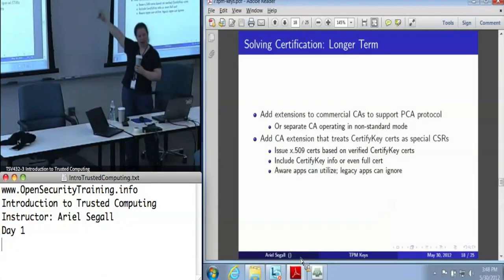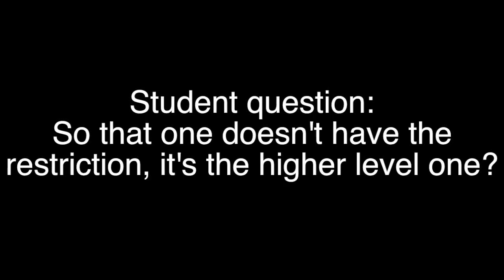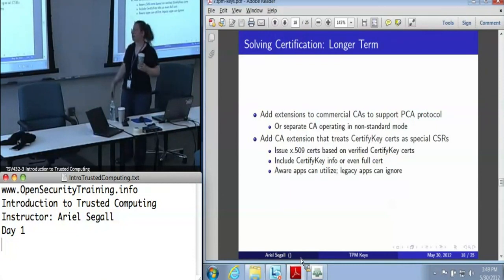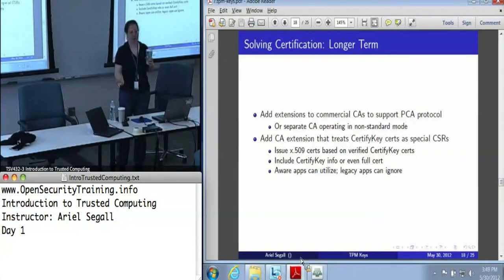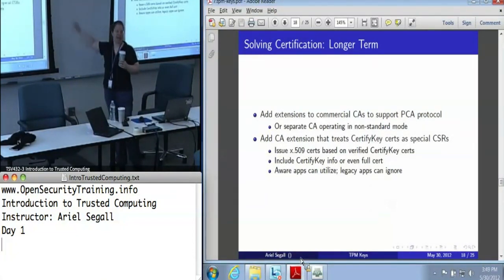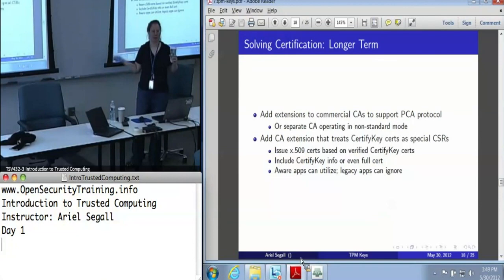For the AIK protocol, the credential format can be whatever you like — if you're a privacy CA running that protocol, you can issue X.509 certs for the AIK. So the problem with the PCA protocol isn't the certificate format, it's the protocol itself. With certified key credentials there are two problems: one is whether the TPM is a CA or not, and the second is that it's not an X.509 CSR. That's why we can implement the certified key solution as a CA module — the CA is essentially translating a TPM credential to a standard CA-signed credential — whereas for AIKs the problem is the protocol it needs to speak.